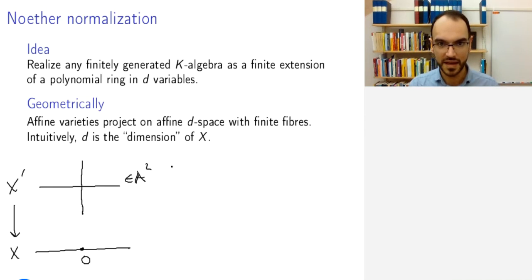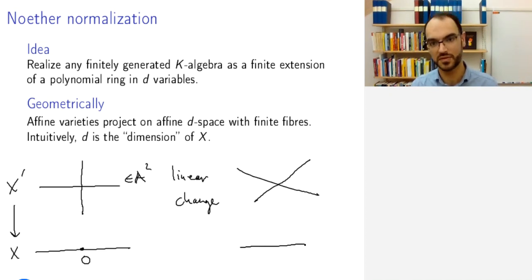But instead, I can do a linear change of variables to get this coordinate cross. It's exactly the same thing. I've just twisted everything. This is something you've done in elementary linear algebra. And now I have no problems. Now, the pre-image of any point is finite. And this is the idea of Noether normalization.